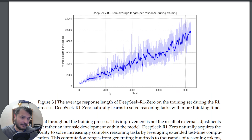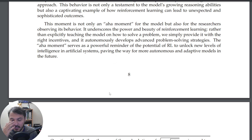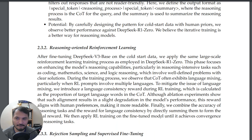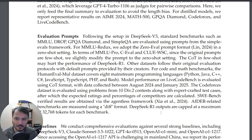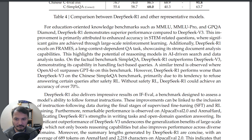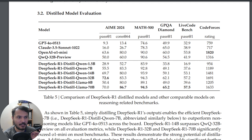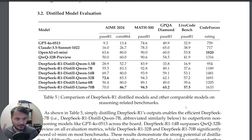The key takeaway is they largely eliminate the fine-tuning step and rely on RL. The caveat is that their base model may have already been very strong — and the fact they still need a cold start suggests it's not entirely SFT-free. Either way, we're seeing a clear trend toward reasoning models. Thanks for watching — like and subscribe, see you next time.